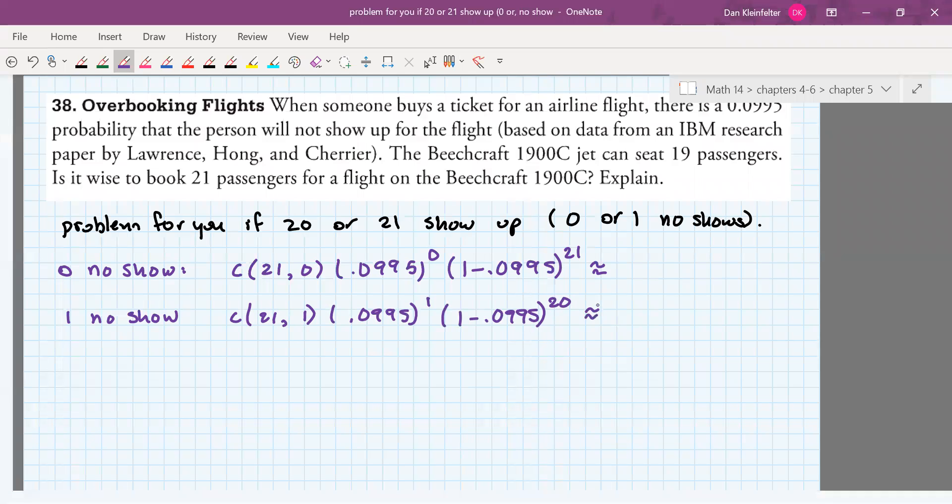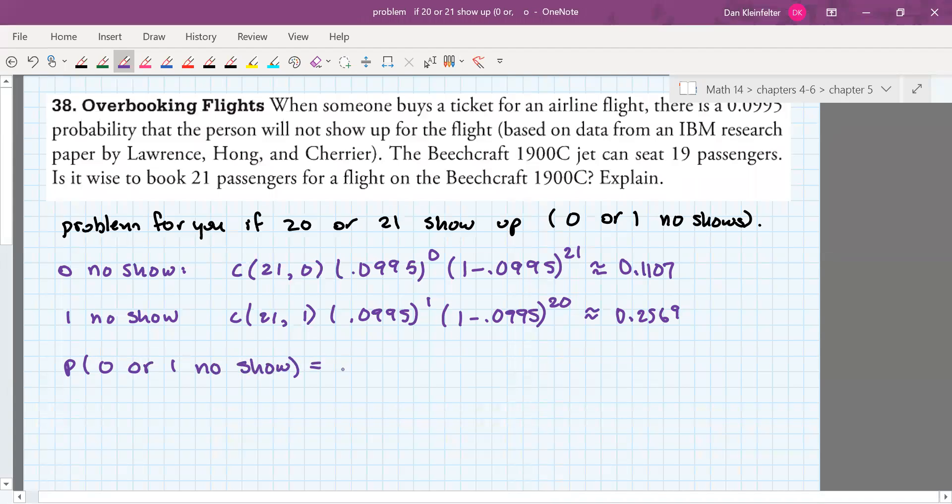All right. So let's go ahead and calculate those couple values. Going through the calculations, we end up with the probability of about 0.11, that there will be no no-shows. And a probability of about 0.569, that there will be one no-show. So the probability of either 0 or 1 no-show will be the sum of those two probabilities. And that works out to be about 0.3676.